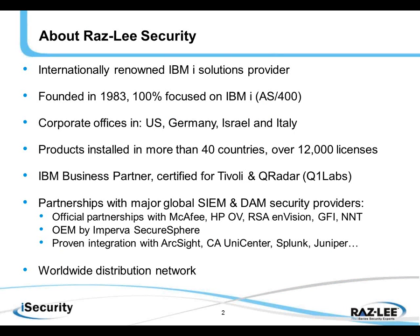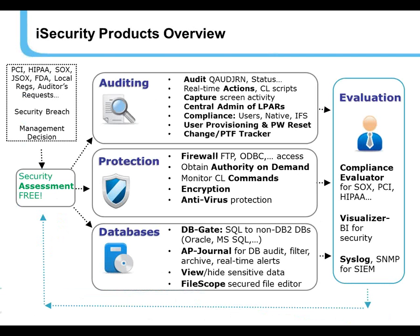Rasly Security is internationally renowned. We've been around almost 33 years now developing software solutions for the IBM i. We have corporate offices in a number of countries and our products are installed in more than 40 countries worldwide. We're proud to be business partners with IBM, certified for Tivoli and for QRadar, and we have partnerships with major global SIEM and DAM database activity monitoring security providers such as McAfee, Imperva, HP, RSA, ArcSight, CA, Splunk, Juniper, and of course we have a worldwide distribution network.